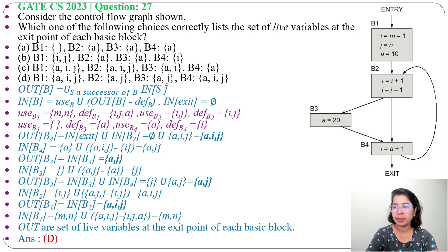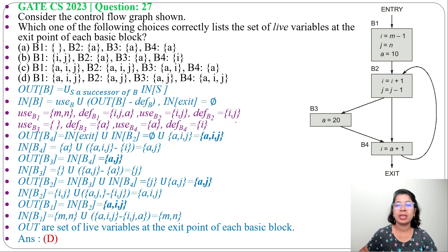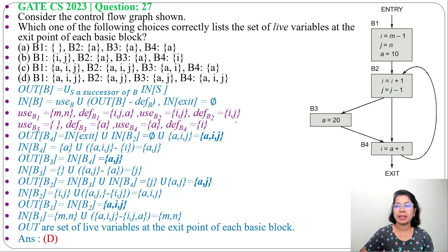The answer is option D. You can also find it directly from the control flow graph. I already discussed live variable analysis in compiler design — just go through the lecture. If this lecture was helpful, please like, share, and subscribe. Thank you, bye bye.